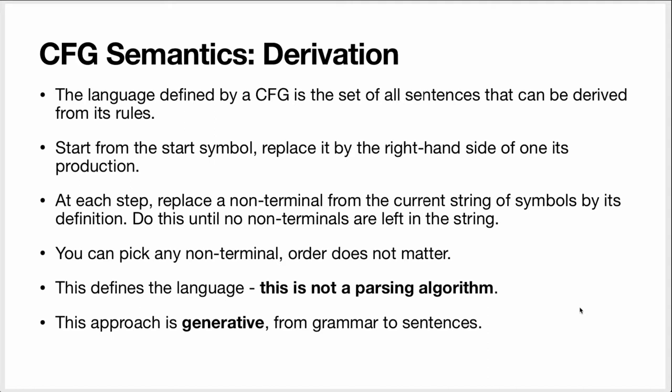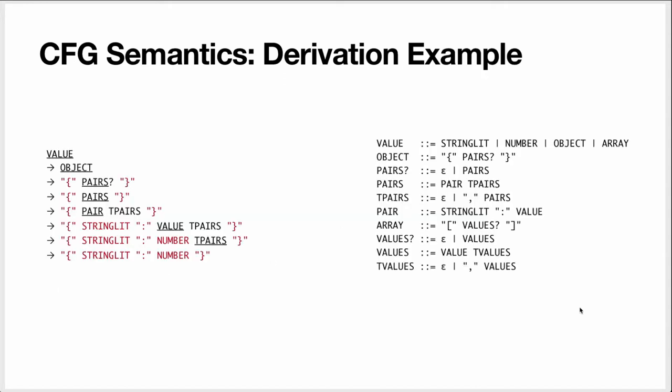A sentence is in the language defined by the grammar if the sentence can be derived from the grammar. This is not a parsing algorithm — we don't use this for parsing. This approach to semantics is called generative because we use the grammar to generate a set of sentences. You could also say it is extensional because we explicitly list sentences. Let's give an example of derivation. We start from 'value', and we pick one of its right-hand sides — we're going to say we want an object.